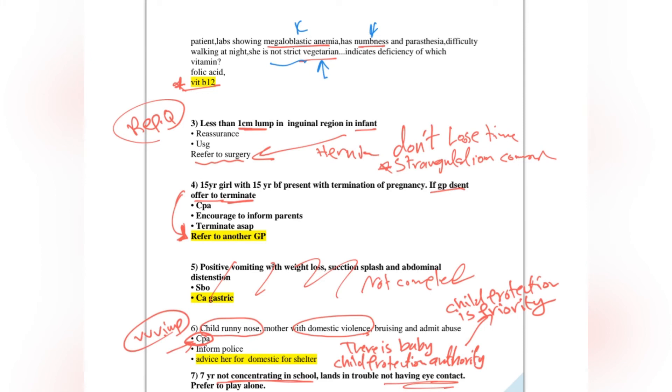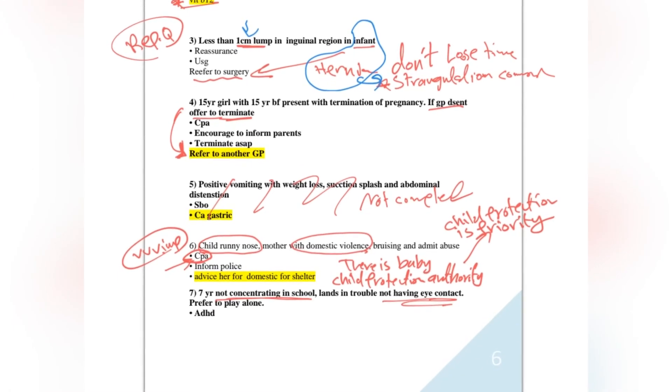An infant with - this is very repeated question also in 2022. A patient who is an infant with one centimeter lump. What to do next? You are a GP. Next, refer to pediatric surgeon. This is hernia. In an infant, do not lose time by checking. Immediately refer this for surgery, for surgeon, because it is very common in infants that hernia will strangulate. Hernia in infant will strangulate as soon as possible, so immediate transfer to surgery.